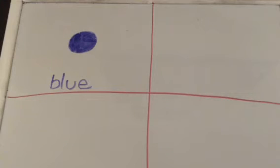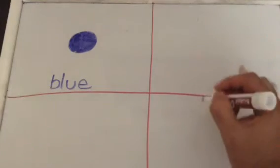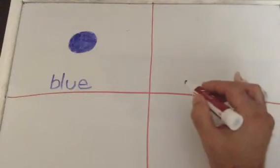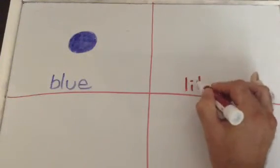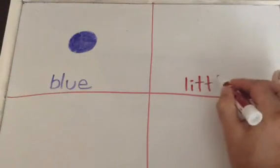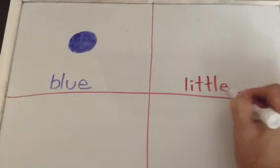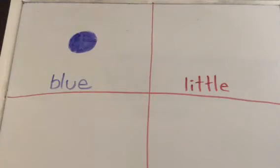Next, we have little. And little is spelled L-I-T-T-L-E. Little. And for little you can draw anything that you know of that is little. Alright. Anything you know of that is little.